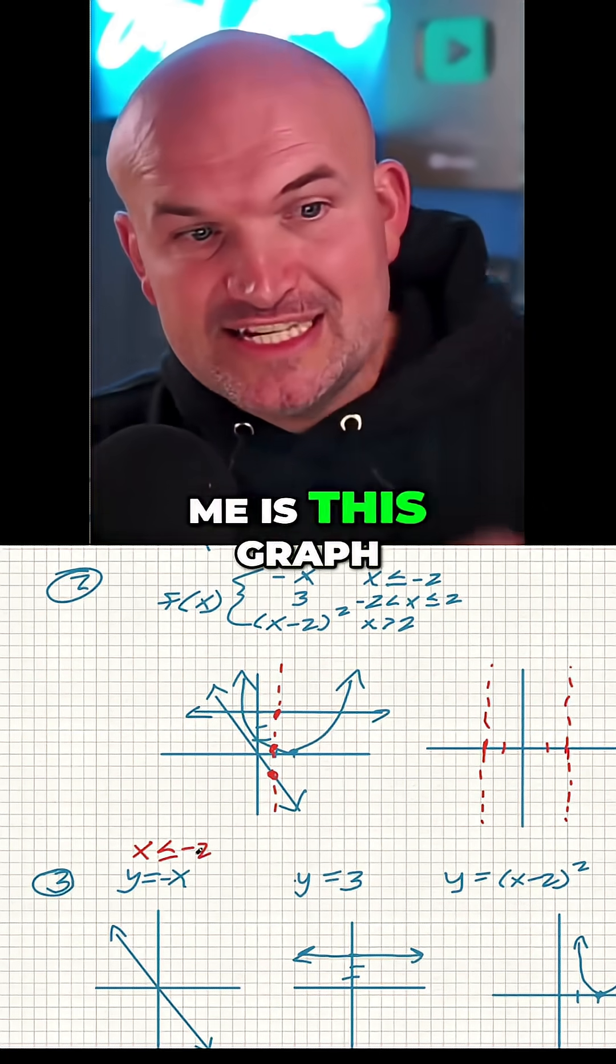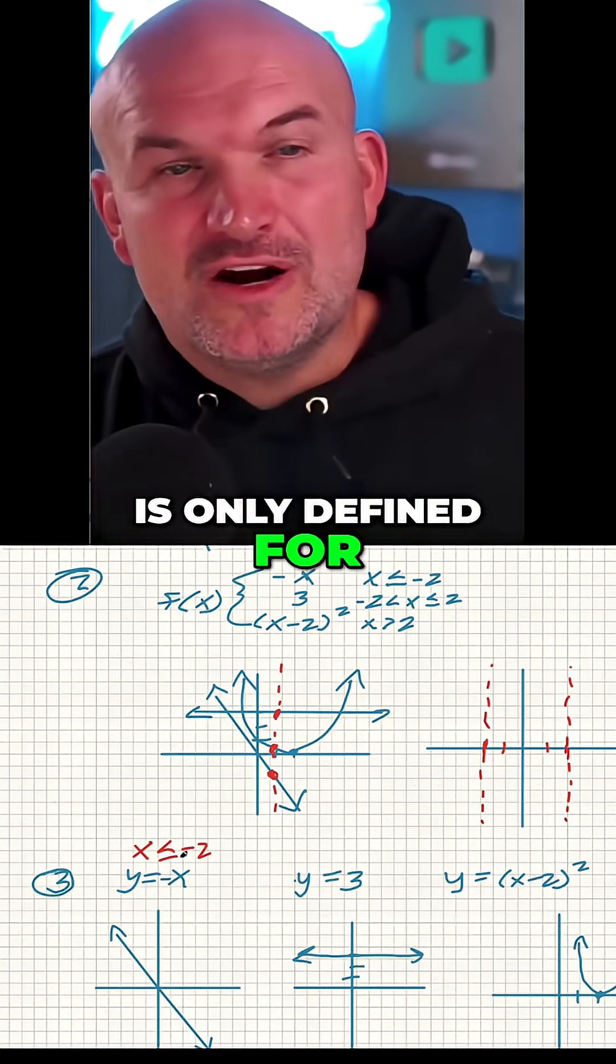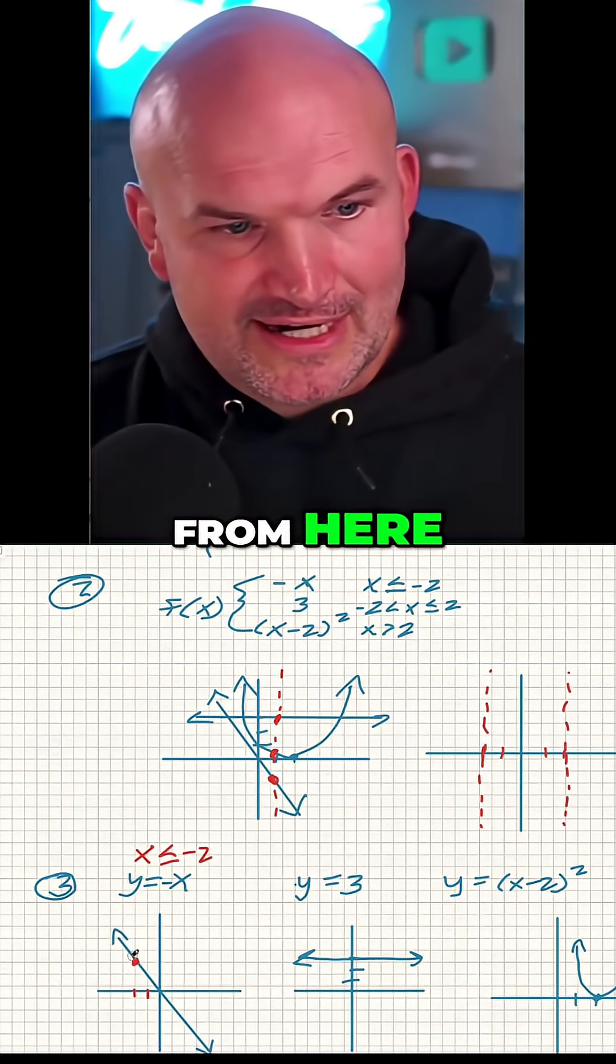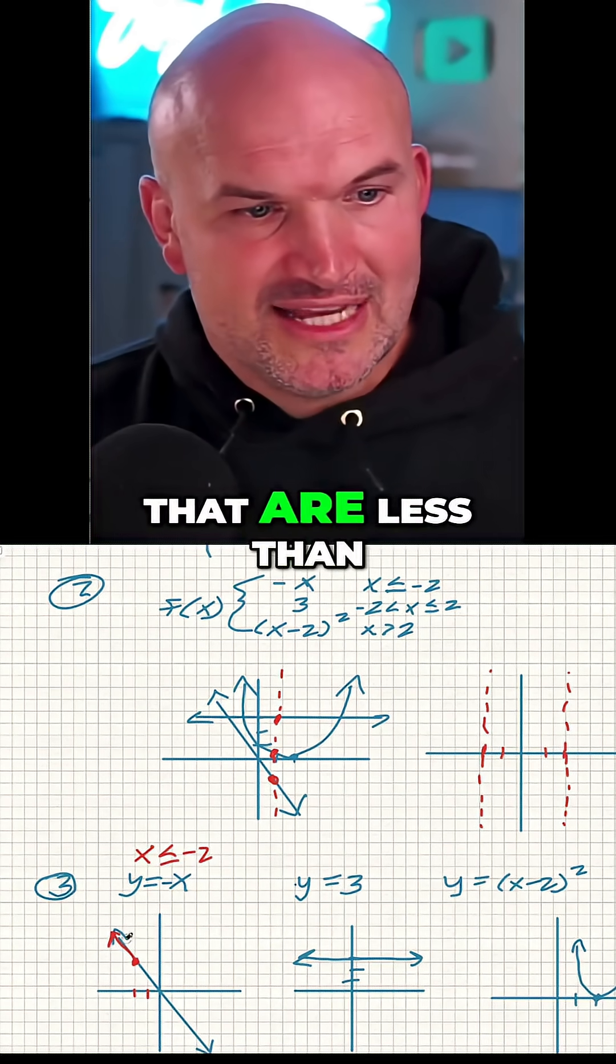So what that's telling me is this graph is only defined for x values that are less than negative two. So it's only defined from here and then for values that are less than negative two, right?